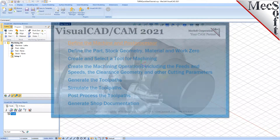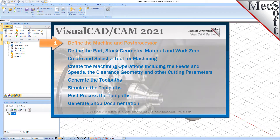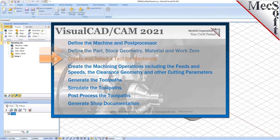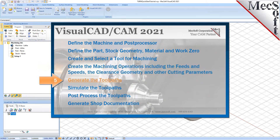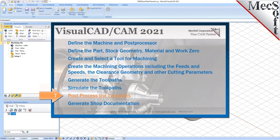We will perform the following basic steps in machining this model. First, we will define the machine and the post processor to use. Then, we will define the part and the stock geometry, material, and work zero. Then, we'll create and select a tool to use for machining. We'll create the machining operations, including the feeds, speeds, the clearance geometry, and other cutting parameters. Then, we'll generate the toolpaths, simulate the toolpaths, post-process the toolpaths, and then generate shop documentation.